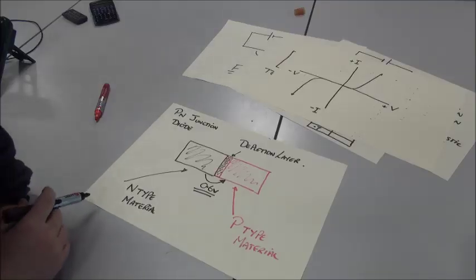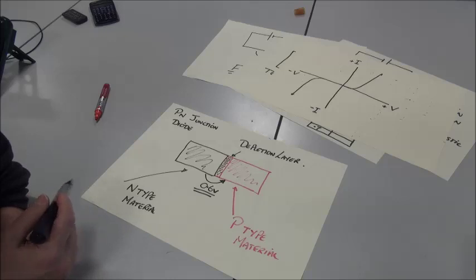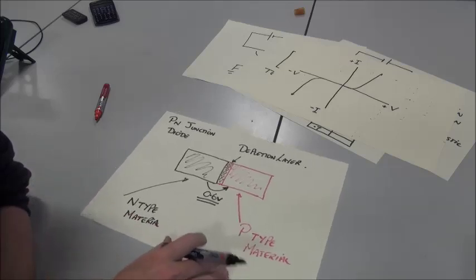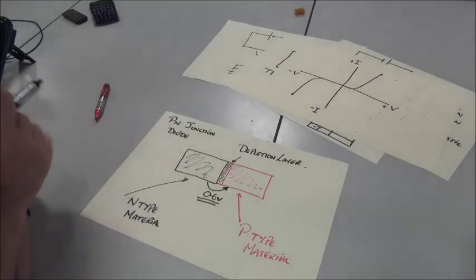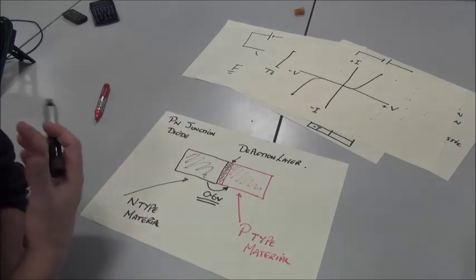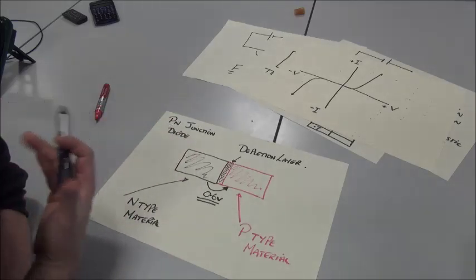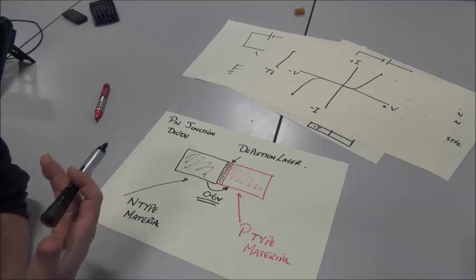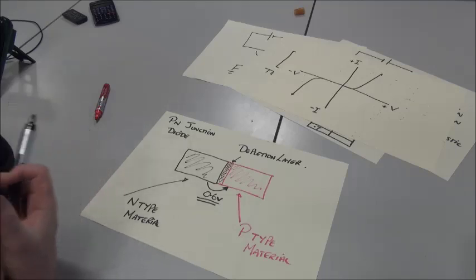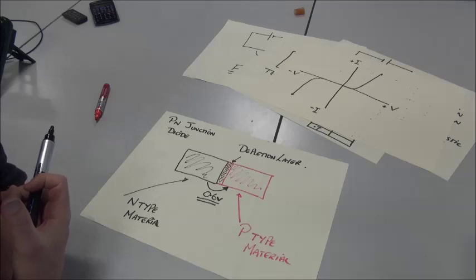Before we do the test on the diodes, we're going to just talk about what a diode is and how it's constructed, very briefly. They're often called PN junction diodes because they're made of a semiconductor material. Years ago, there used to be germanium and silicon diodes, but nowadays almost all diodes are made from silicon.